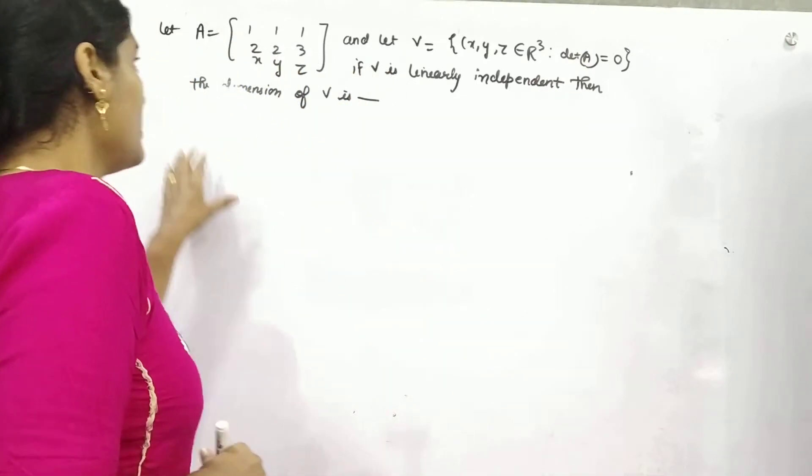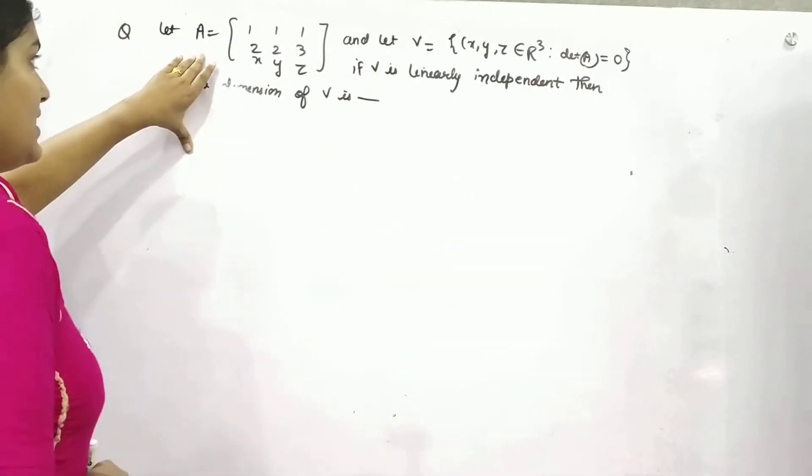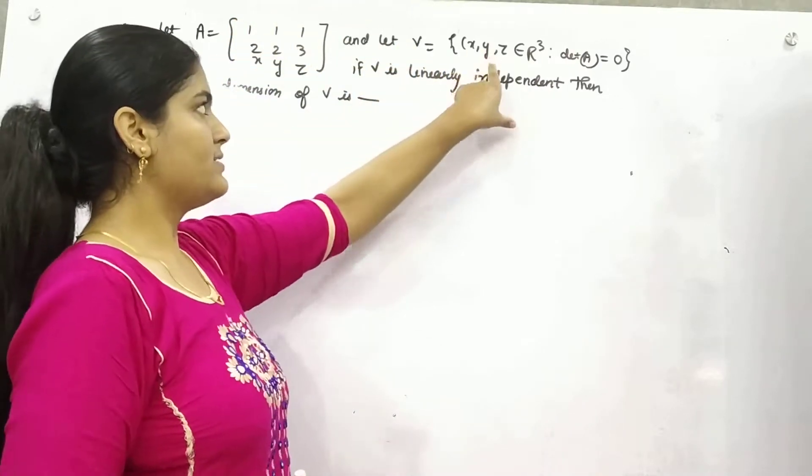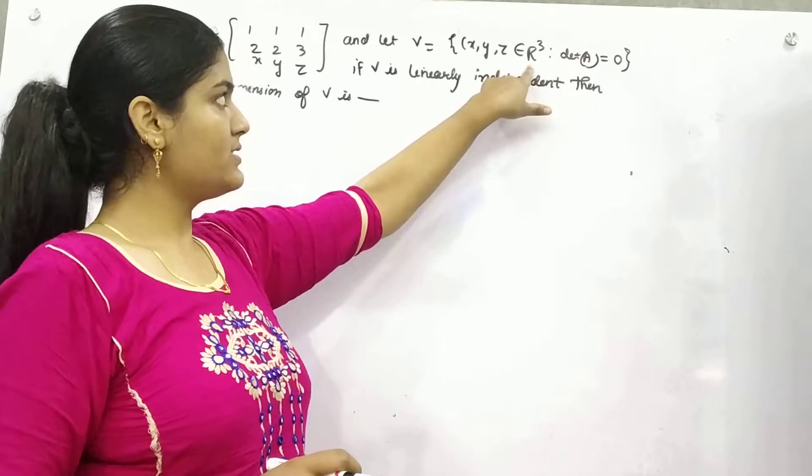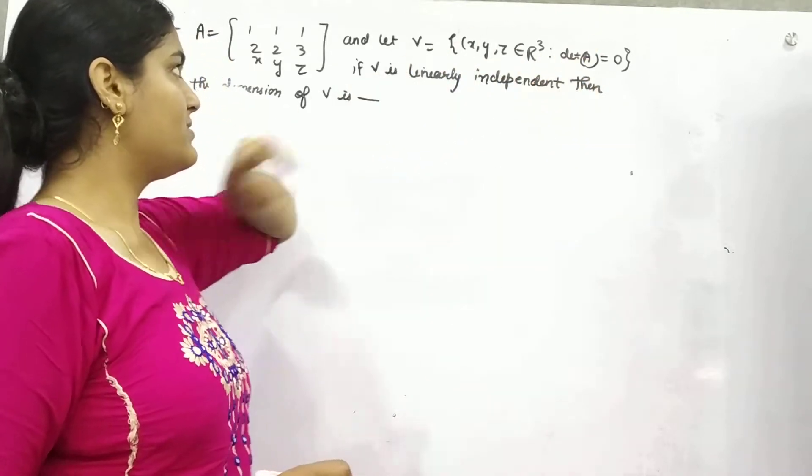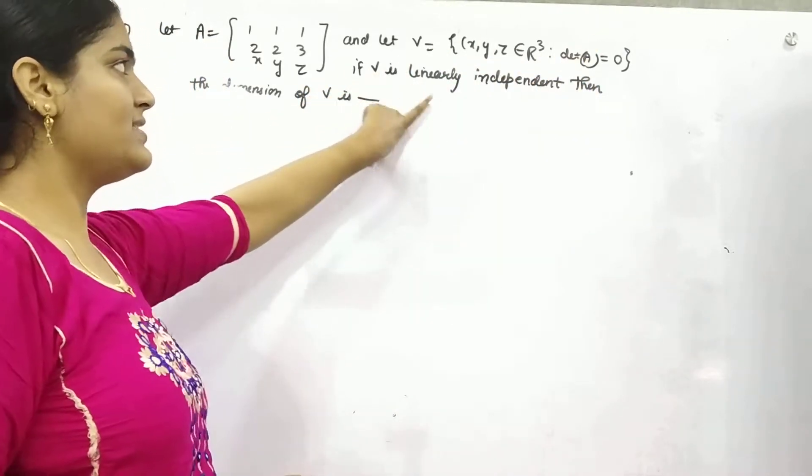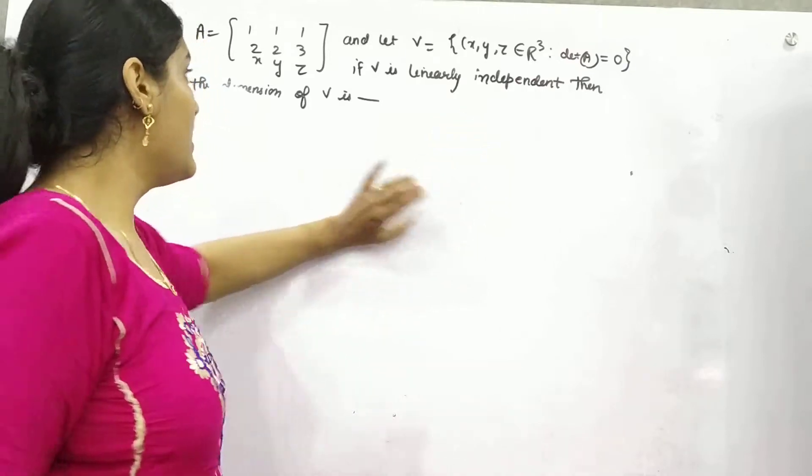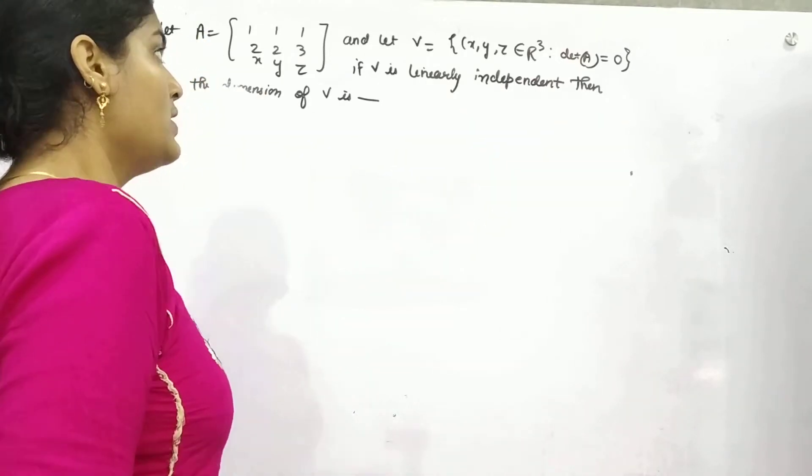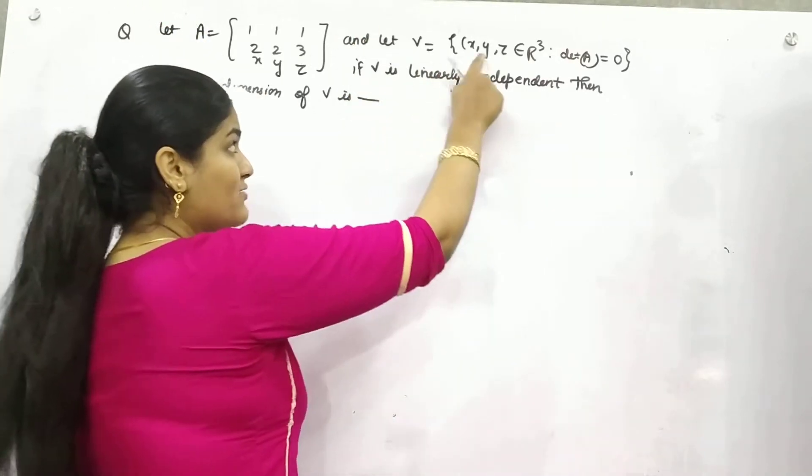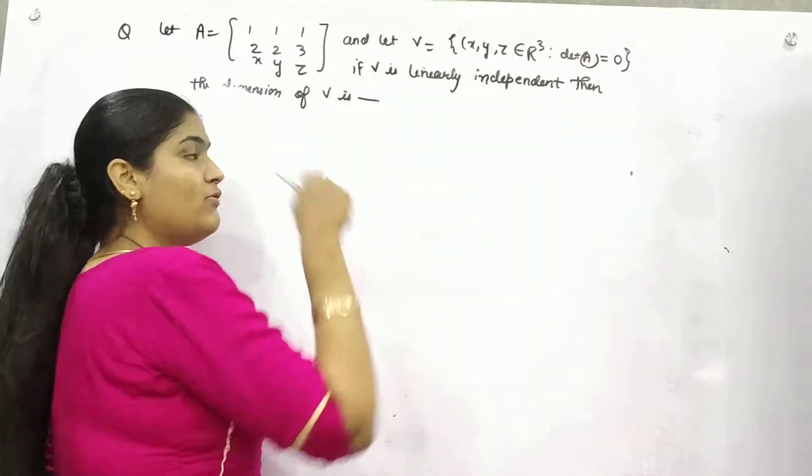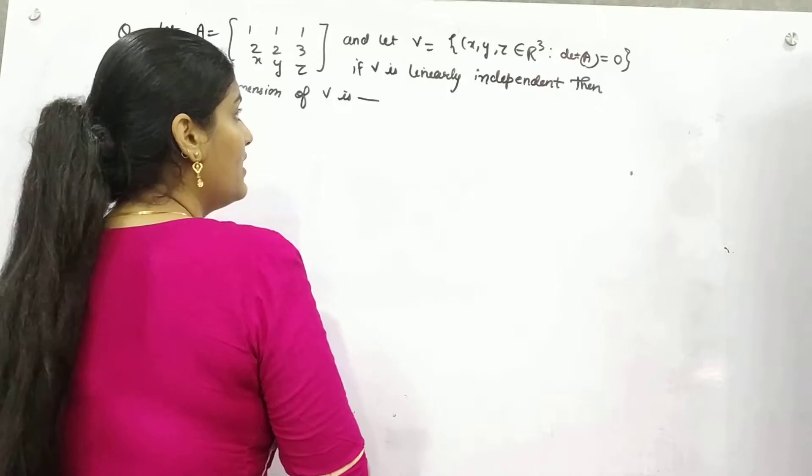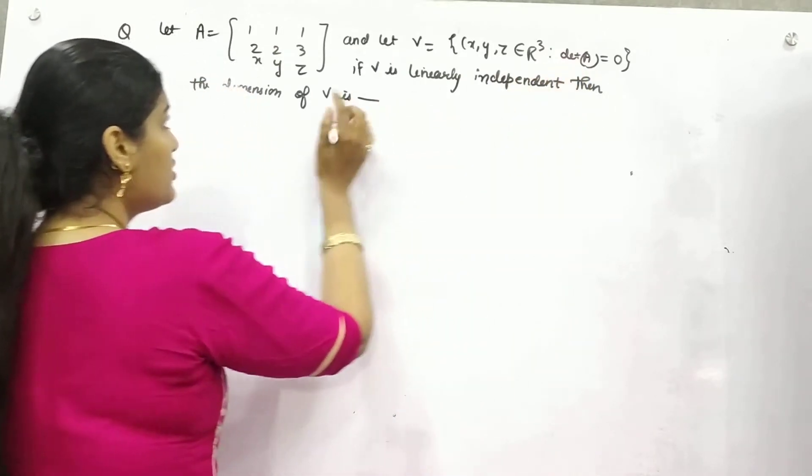So let's begin. You are given a vector space V with elements in the form x, y, z, and it is a three-dimensional space where the determinant of A is zero. Now let's say V is linearly independent. Then what's the dimension of V? We know x, y, z belongs to R³, but what is the dimension of V? The condition given is that the determinant of A is zero.